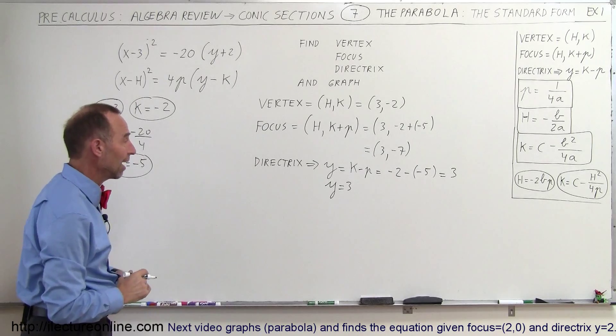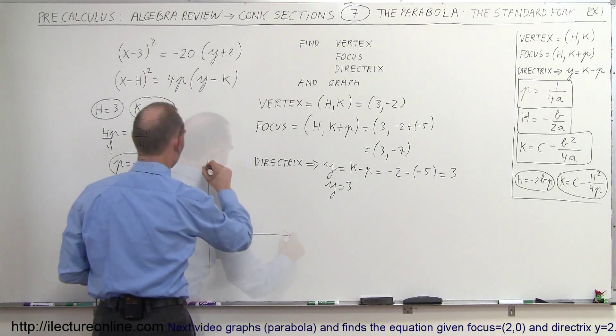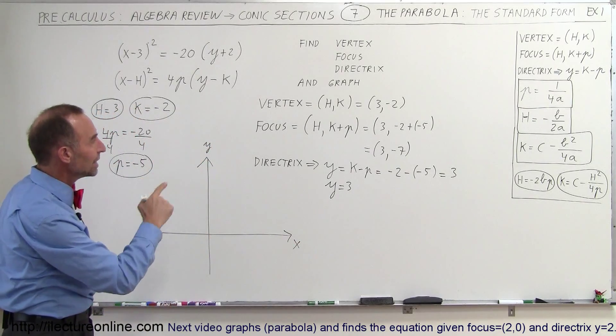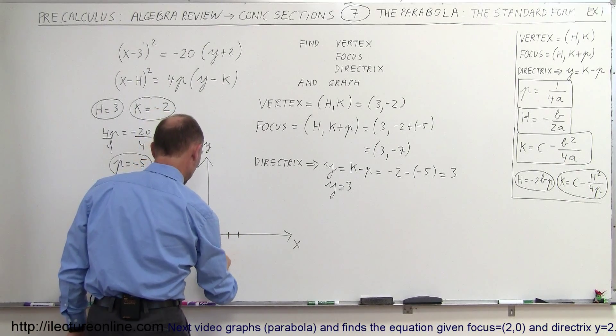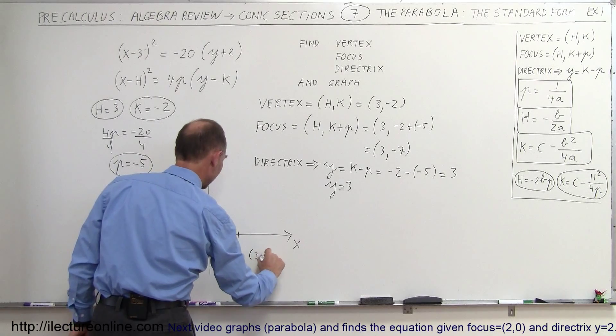Now we're ready to go ahead and graph the parabola. So here's my y-axis, here's my x-axis. And let's see here, the vertex is at 3, negative 2. So that's 1, 2, 3, and 1, 2. So this is the position of the vertex. So that's equal to 3, negative 2.